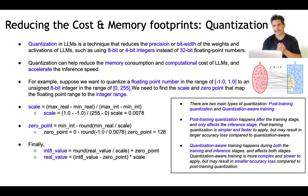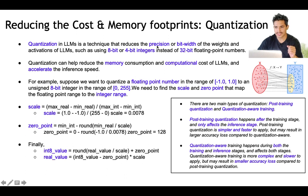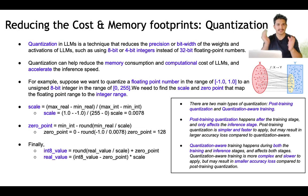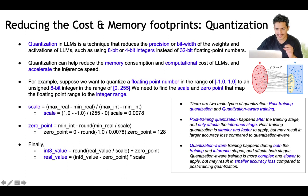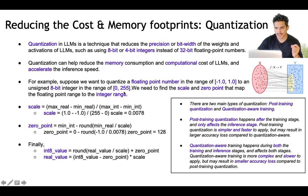One very interesting technique getting popularity is quantization. Quantization reduces the precision or bit-width of the weights and activations of LLMs — for example, using 8-bit or 4-bit integers instead of 32-bit floating point numbers. The weights are floating point numbers; we reduce them to 8-bit or 4-bit integers. This reduces memory consumption and computational cost and accelerates inference speed. To understand how: suppose we want to quantize a floating point number in the range of -1 to +1 to an unsigned 8-bit integer in the range of 0 to 255.